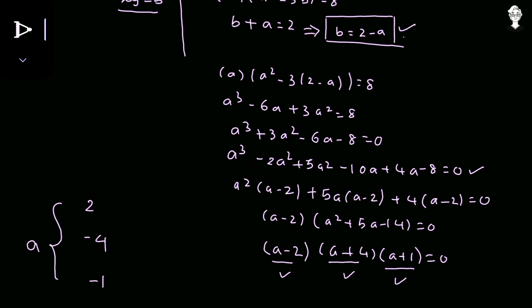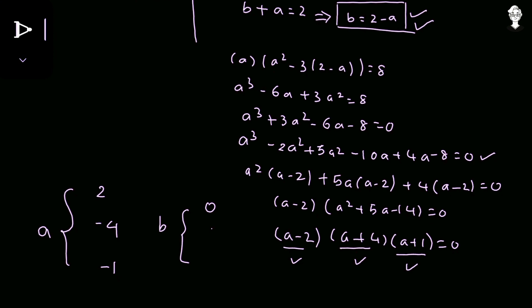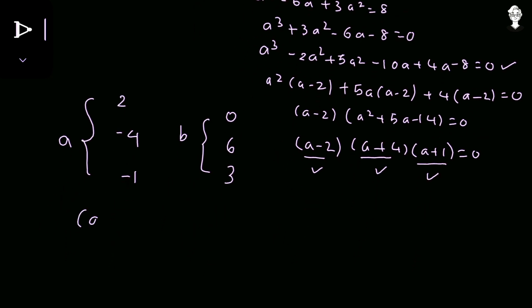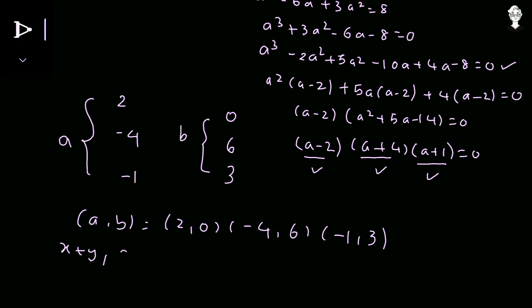Using b = 2 − a for each value: when a = 2, b = 0; when a = −4, b = 6; when a = −1, b = 3. So the (a, b) pairs are (2, 0), (−4, 6), or (−1, 3). Since a = x + y and b = xy, we have (x + y, xy) satisfying (2, 0), (−4, 6), or (−1, 3).